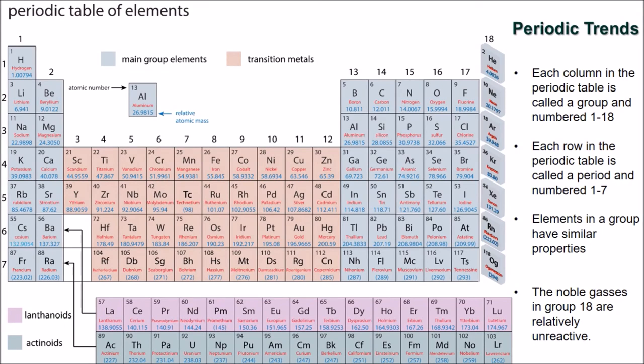Each column in the periodic table is called a group. Elements in each group have similar chemical and physical properties, and they are labeled with the numbers 1 through 18. Each row in the periodic table is called a period, and is numbered 1 through 7. Elements in a group have similar properties.